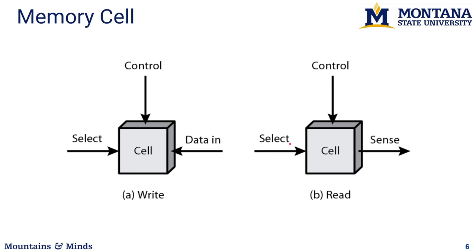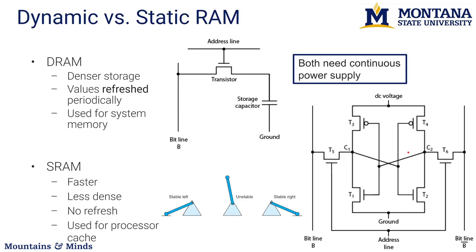When we think about memory, we can create an abstraction and think of it as a memory cell. To write into a memory cell, we select that cell, pass a control signal saying we are writing, and pass data in that will be recorded. To read, we also identify the address, pass a read control signal, and extract the data on some wires — the sense or data output.